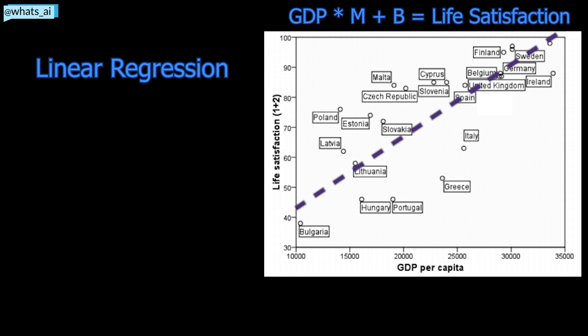From Bulgaria to Sweden, the increase in GDP per capita clearly increases the life satisfaction of its citizens. The line will be calculated by measuring the minimum distance between the points in order to find the most optimal line.